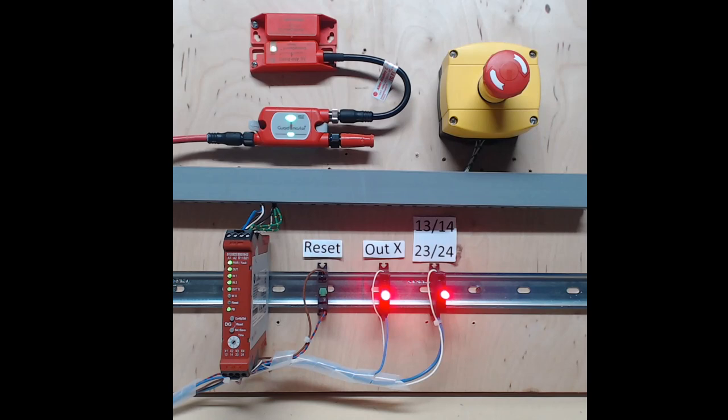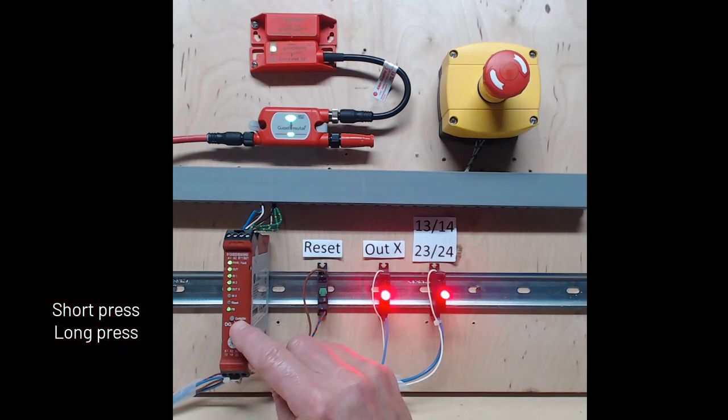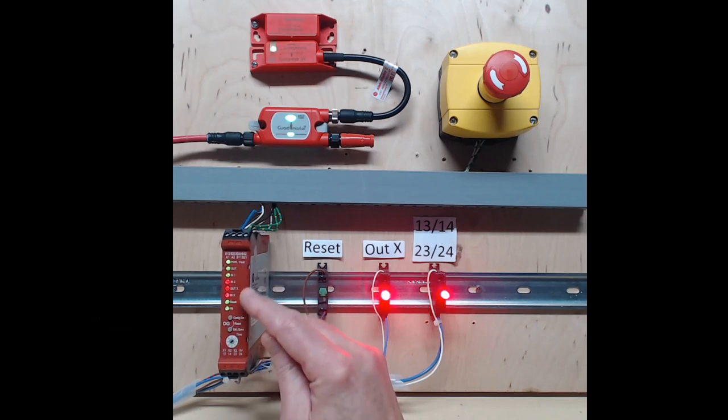The configuration buttons are operated in two different ways. You can short press the buttons, or long press the buttons. To see the current configuration, I short press the config set button. Notice how the indicator LEDs change color. This is the current configuration.